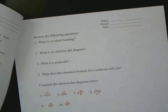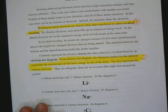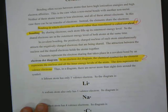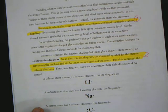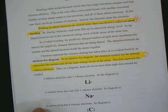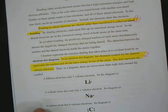Next question is, what is an electron dot diagram? Go back to this. What you need to have written down is the second and third sentence. In an electron dot diagram, the chemical symbol for the element represents the nucleus and all the inner energy levels of an atom. The dots represent valence electrons.